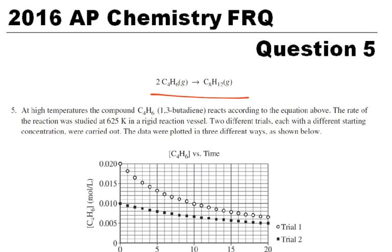At high temperatures, the compound C4H6 reacts according to the equation above. The rate of the reaction was studied at 625 Kelvin in a rigid reaction vessel. Two different trials, each with different starting concentrations, were carried out, and the data were plotted in three different ways as shown.